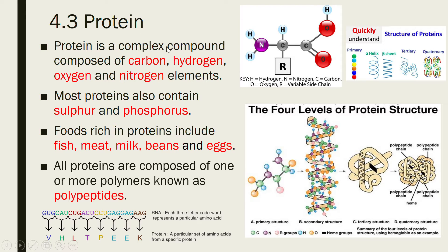Protein is a complex compound composed of carbon, hydrogen, oxygen, and nitrogen elements. Most proteins also contain sulfur and phosphorus.